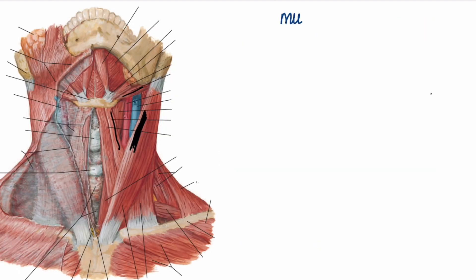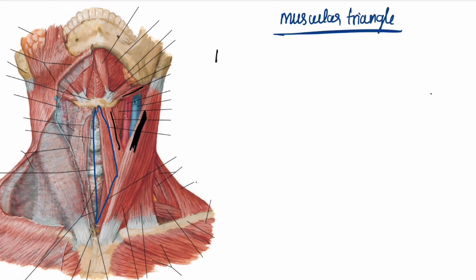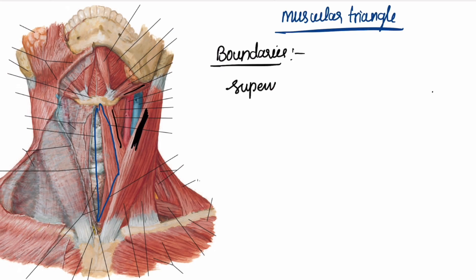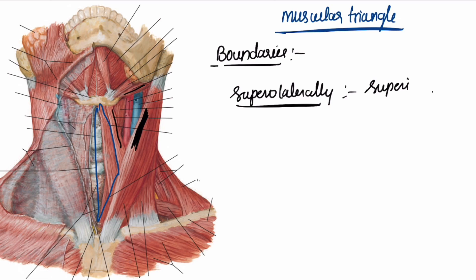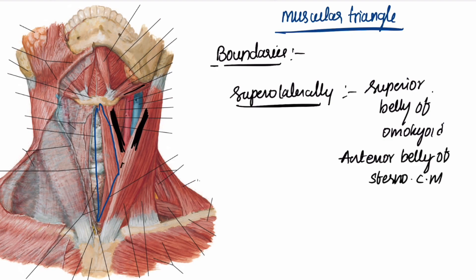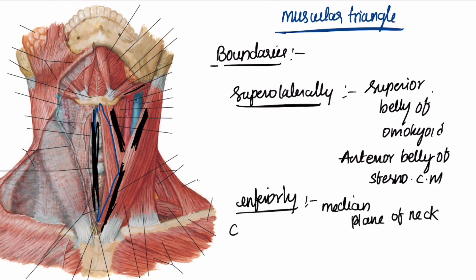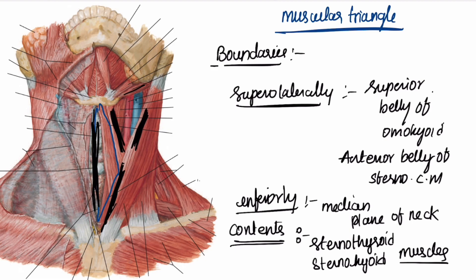Now let us discuss about the muscular triangle. Its boundaries include the superior belly of the omohyoid muscle, the anterior border of the sternocleidomastoid muscle, and the median plane of the neck inferiorly. The contents are the sternothyroid and the sternohyoid muscles.